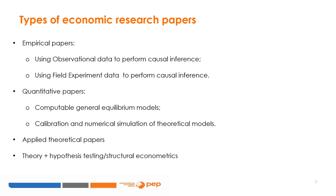Depending on the research question, one may use: (1) empirical methods, using observational and field experiment data to obtain causal inferences; (2) quantitative methods, such as computable general equilibrium models, and calibration and numerical simulations of theoretical models; and finally (3) theoretical methods. In between these three main types, you have papers that combine theoretical and empirical methods. The key difference between these paper types is how they try to answer the research question.